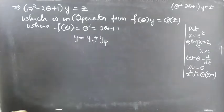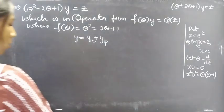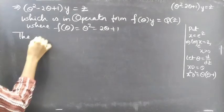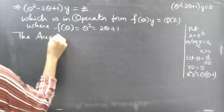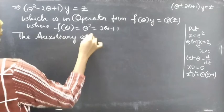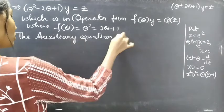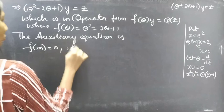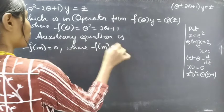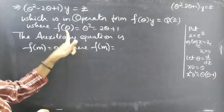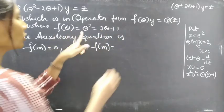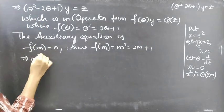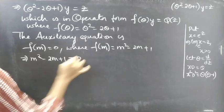We need to find the general solution given by y = yc + yp. The auxiliary equation is f(m) = 0. Since f(θ) = θ² − 2θ + 1, we replace θ by m to get f(m) = m² − 2m + 1. The auxiliary equation becomes m² − 2m + 1 = 0.